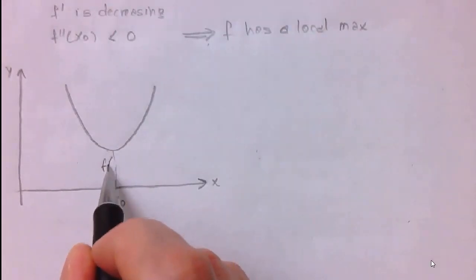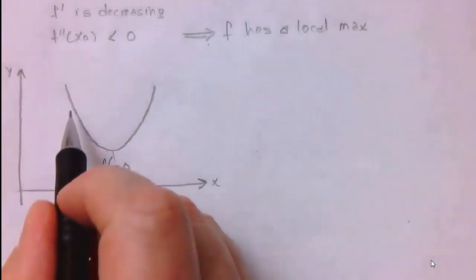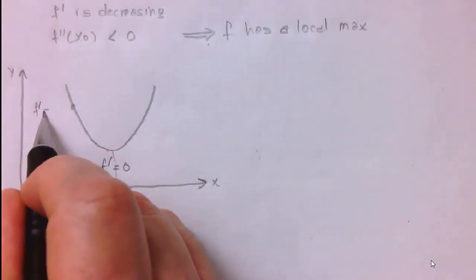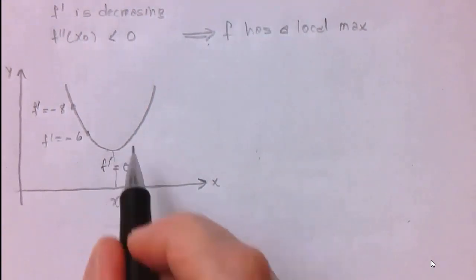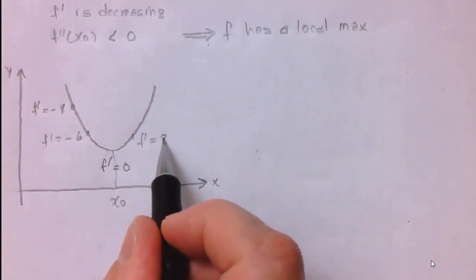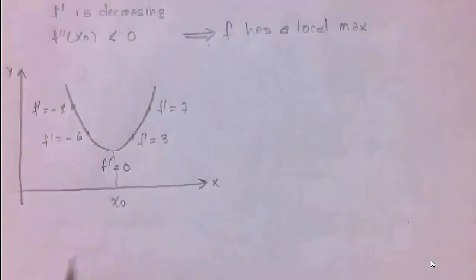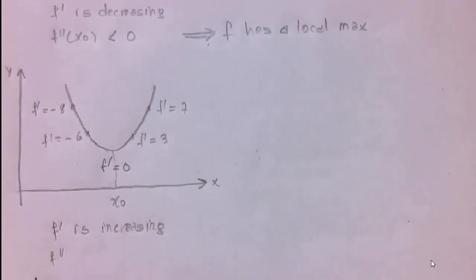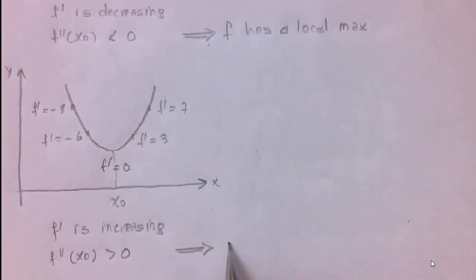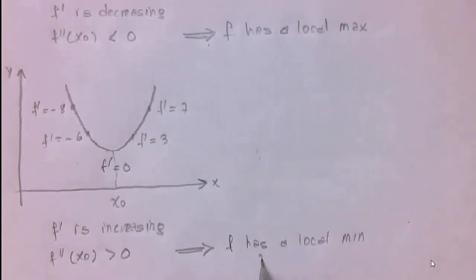Similarly, suppose the first derivative at x₀ is 0. Before that point the first derivative might be negative 8, then negative 6, then 0, then 3, then 7. So f prime is increasing, and if f prime is increasing, the second derivative at x₀ is greater than 0. In that case, f has a local minimum at x₀.